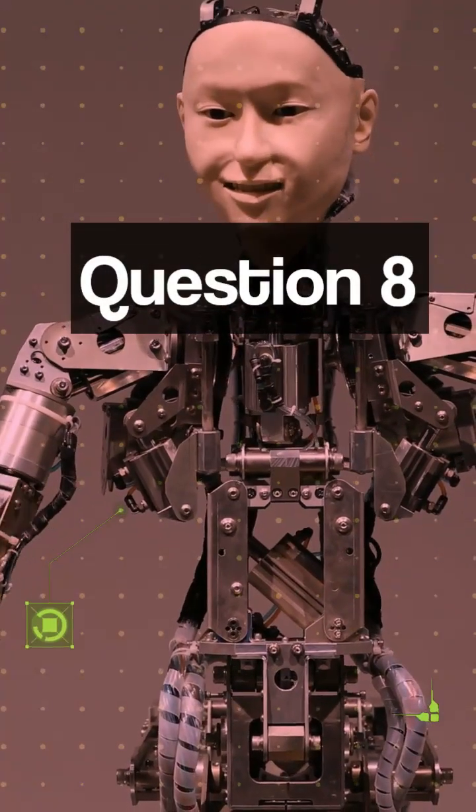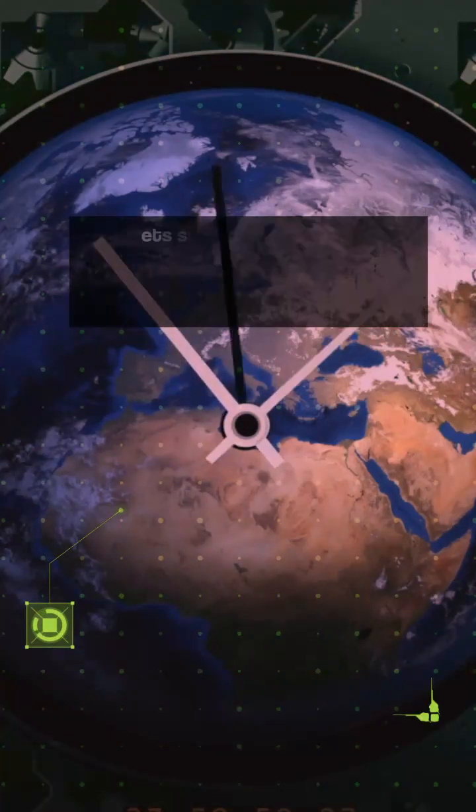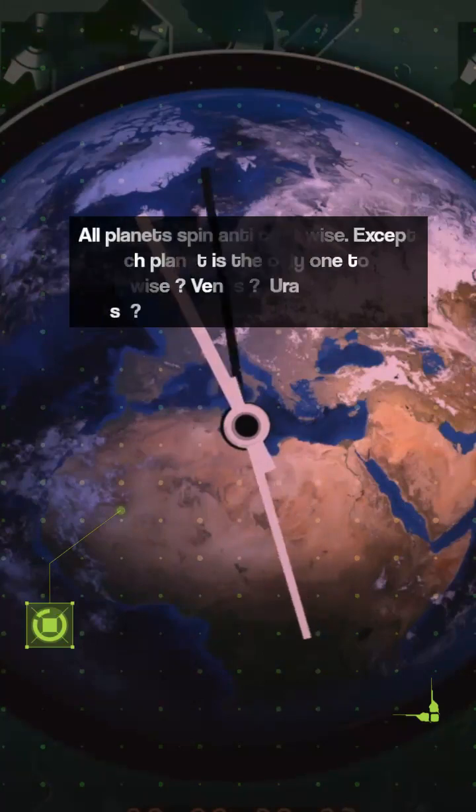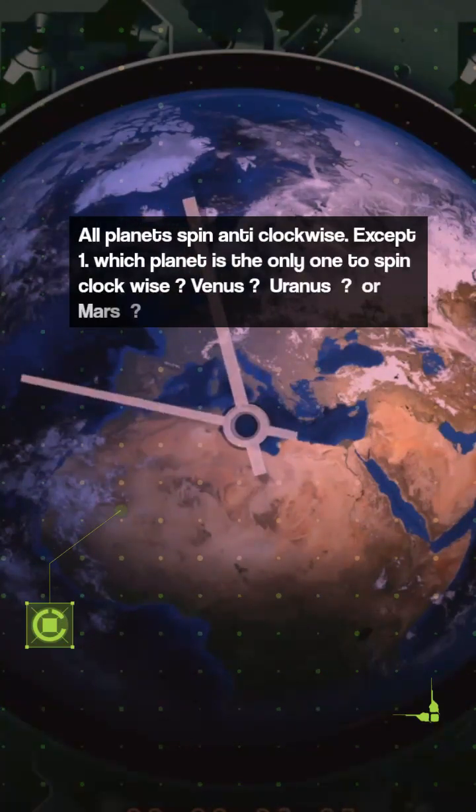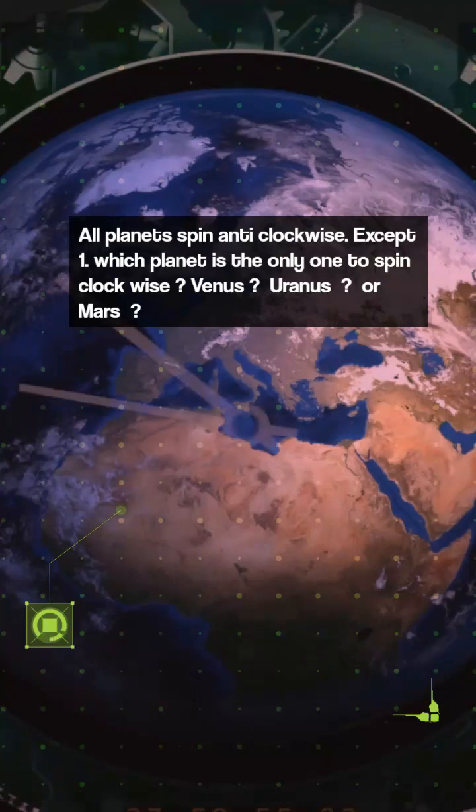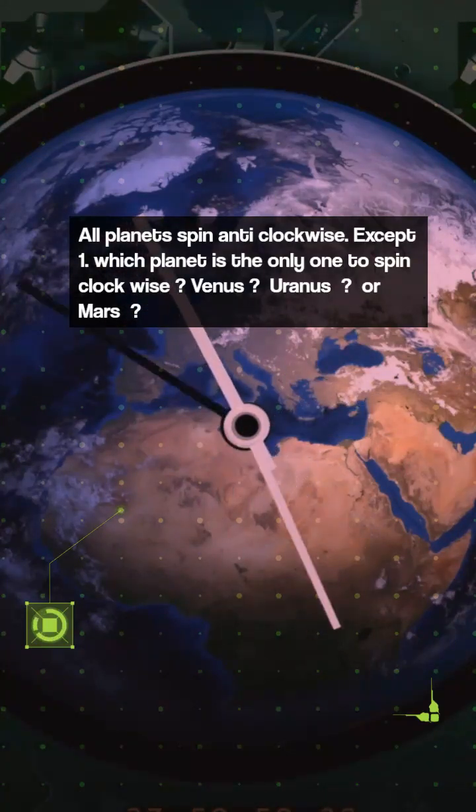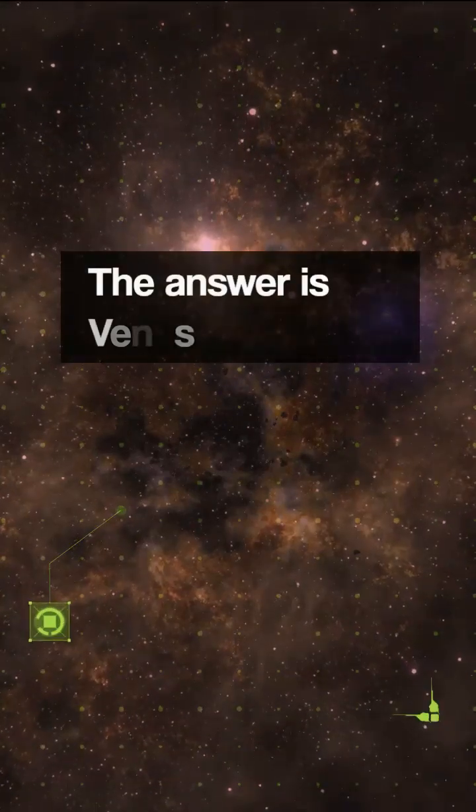Question 8. All planets spin anti-clockwise except one. Which planet is the only one to spin clockwise? Venus, Uranus or Mars? The answer is Venus.